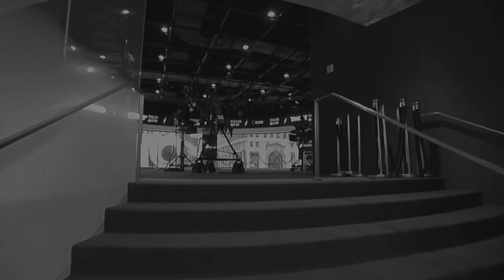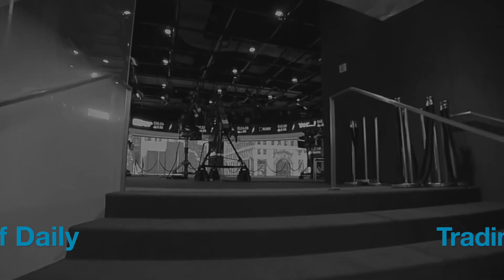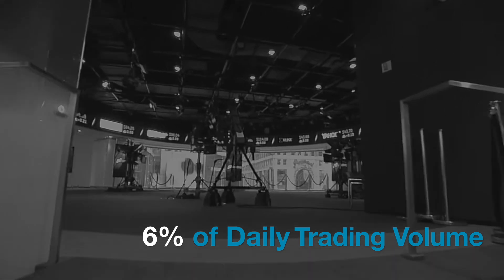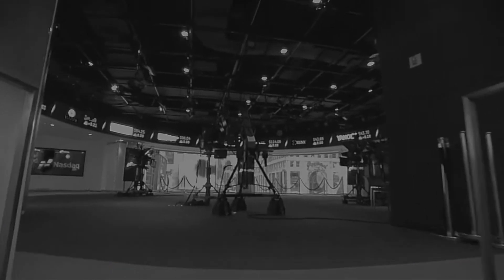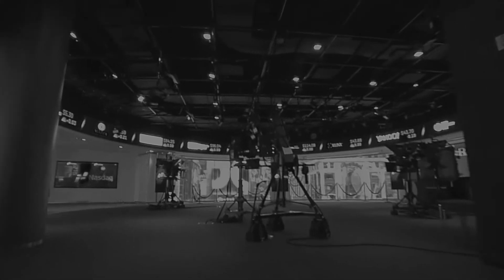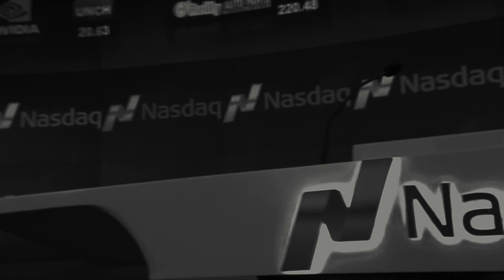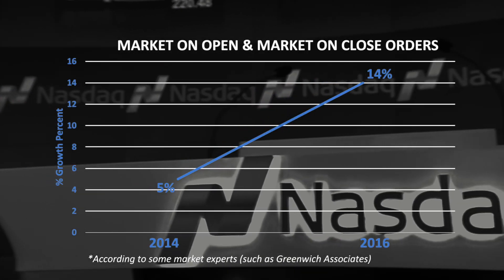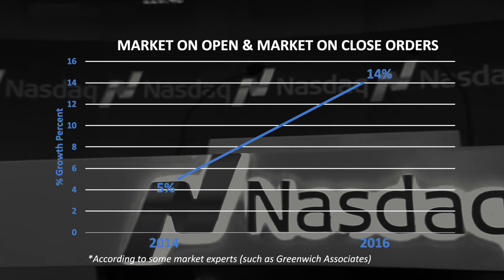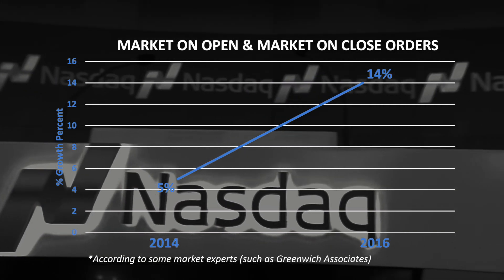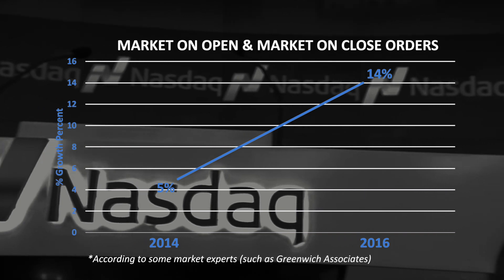The auction at the close alone accounts for approximately 6% of daily traded volume. This large liquidity pool at the close frequently means that larger orders are being executed there rather than throughout the day. According to some market experts, such as Gretich Associates, the use of market on open and market on close orders increased from 5% to 14% in a two-year period from 2014 to 2016.